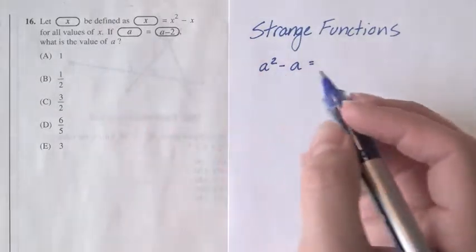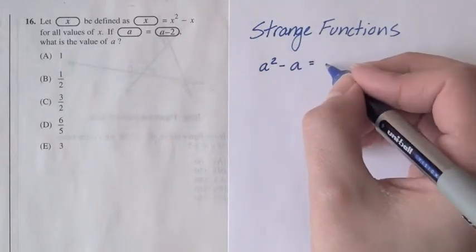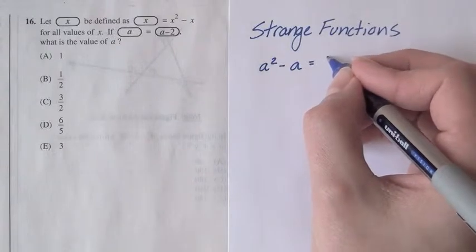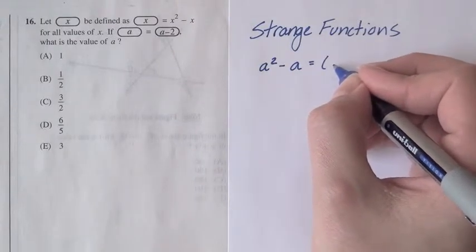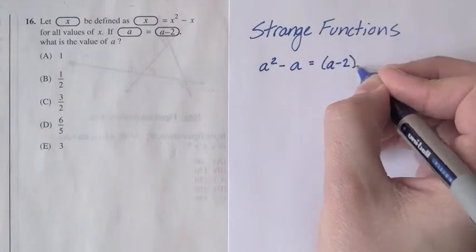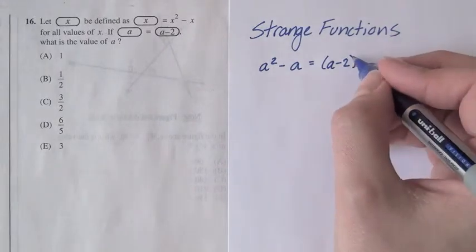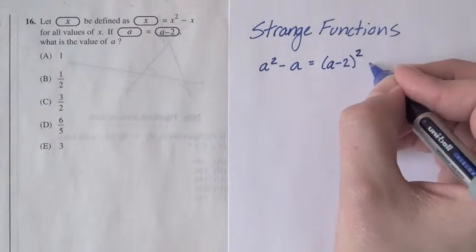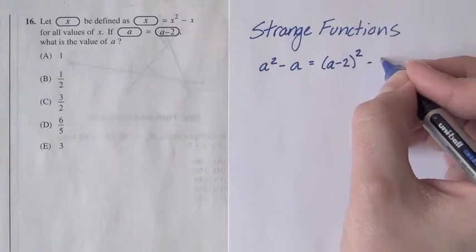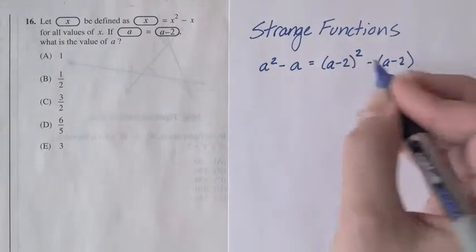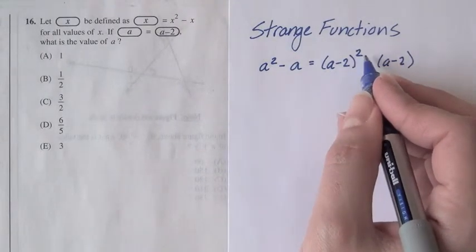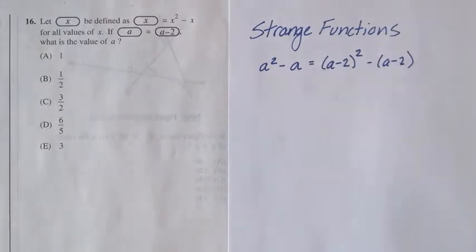Now on the right side of the equal sign we're going to do the same thing. Make sure to use a lot of parentheses when you do this sort of thing, when you sub in values into functions. It's going to make you make fewer sign errors, make fewer errors when you're squaring things. So we'll have a minus 2 in parentheses squared minus a minus 2 in parentheses.